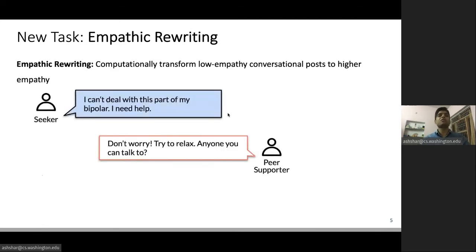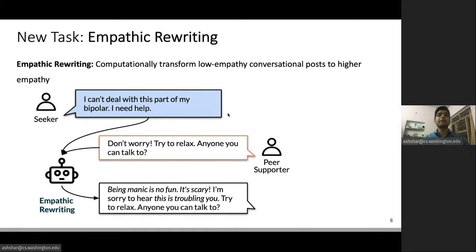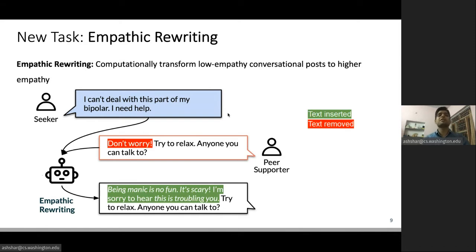For example, given a post from a support seeker, 'I can't deal with this part of my bipolar. I need help' and a corresponding low empathy response 'Don't worry, try to relax, anyone you can talk to,' we want to increase empathy by transforming it to something like 'being manic is no fun. It's scary. I'm sorry to hear this is troubling you. Try to relax, anyone you can talk to.' The rewritten response communicates more empathy through understanding of feelings and experiences - understanding that if the seeker is facing bipolar issues, they can have manic phases and it can be scary - and also the display of felt emotions, saying things like 'I'm so sorry to hear this is troubling you.'